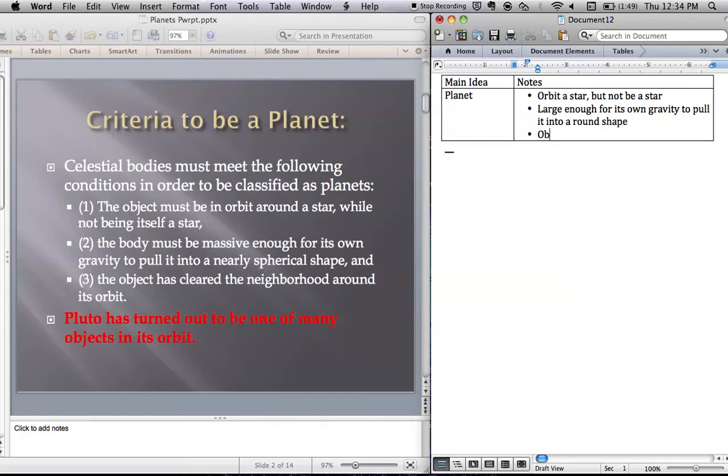And the object must have cleared its orbit of other objects. So it has to be the only thing in its orbit. Other stuff may cross the orbit but this has to be the only object following its path around the Sun. You have to meet all three criteria. And it turns out that Pluto misses the third.